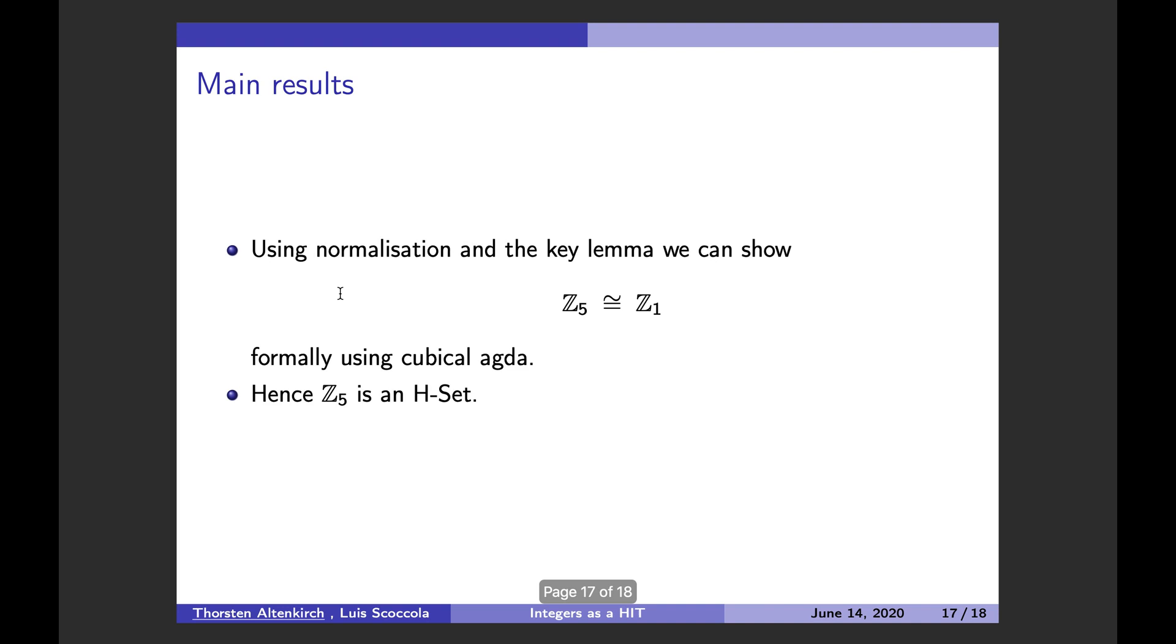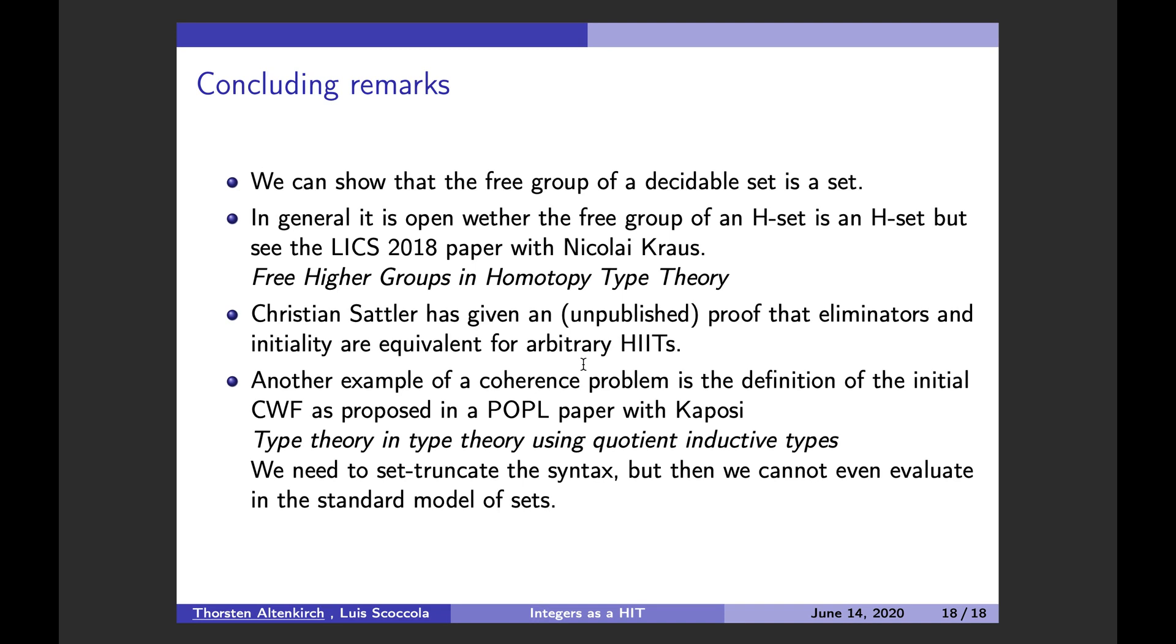To prove that this pattern matching applies initiality, we actually had to fill a cube. And filling a cube is a higher dimensional version of like completing a commutative diagram. So here, in this cube, we can show that all these faces on the bottom and on the sides, they commute. And hence, by pasting them together, we know that the top face commutes. And for the other representation, for the previous representation of the integers, we have to do something similar. But in this case, it's a four-dimensional cube and that creates lots of extra work. Okay. So the result we have is that using this normalization idea and again using this key lemma, we can show that this representation of the integers is equivalent isomorphic to the normal form integers. And we can do this formally, or we have done it formally, using cubical Agda. And hence, as a corollary, we know that the integers we've just defined are an H set.